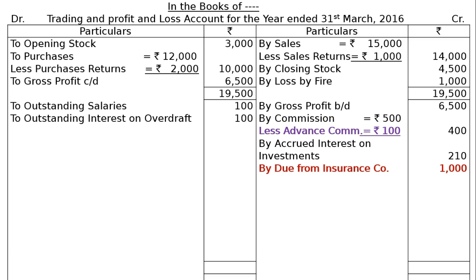The trial balance shows Bank Overdraft at 5% taken on 1st April 2015 of Rs. 2,000. Since the overdraft was taken at the beginning of the year and has not been paid, interest is outstanding for the whole year. Calculating 5% of Rs. 2,000 gives Rs. 100. This outstanding interest on overdraft is a hidden adjustment, shown in the Profit and Loss Account debit side and under Current Liabilities in the Balance Sheet.